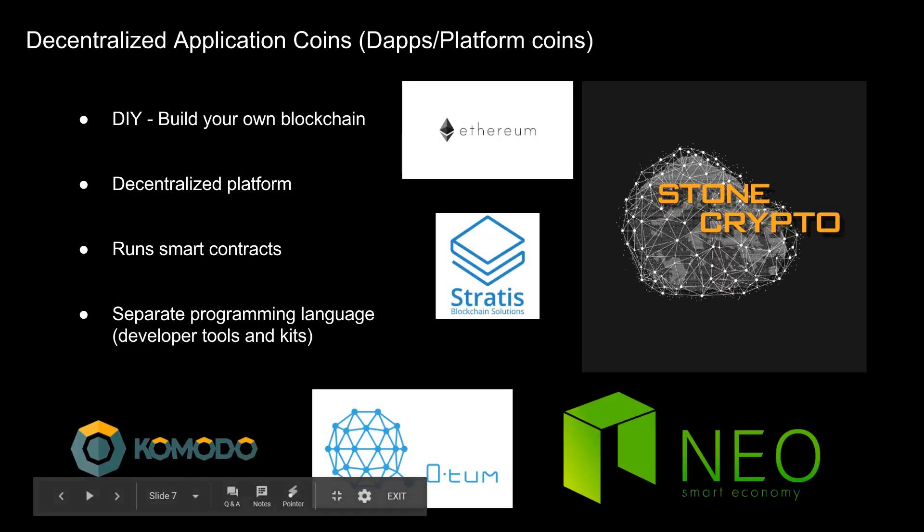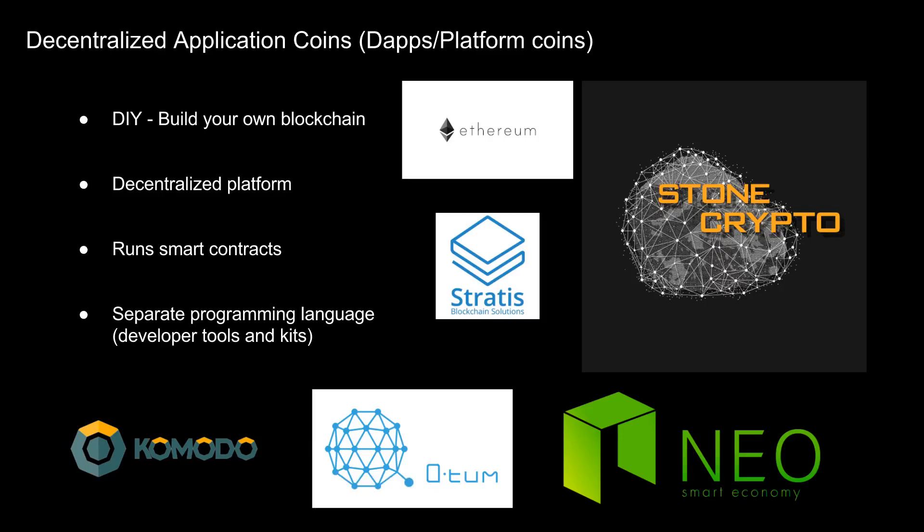Decentralized applications or platform coins: platform coins such as Ethereum, NEO, Quantum, Stratis, and many more provide businesses that don't want to spend countless hours or millions of dollars developing a secure public blockchain a way to do so on one of these platforms. They basically provide a DIY model — build your own blockchain. These platforms are decentralized and allow businesses to tie in smart contracts onto their blockchain, which help lower costs and increase efficiencies drastically.